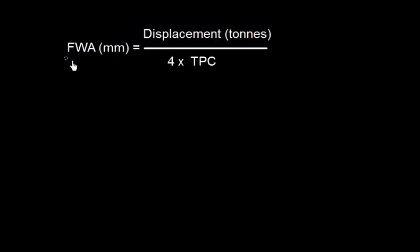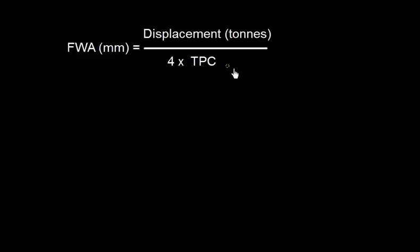In this video, let us understand this formula: Fresh Water Allowance in millimeters is equal to displacement in tons — specifically the summer displacement — divided by four, multiplied by TPC, which is tons per centimeter.